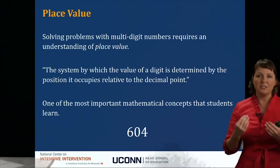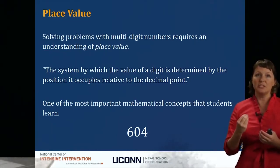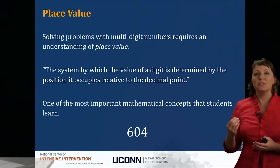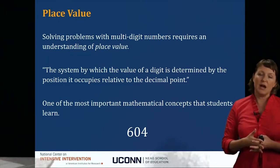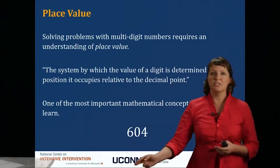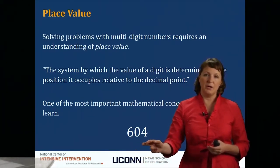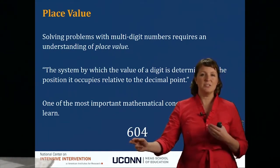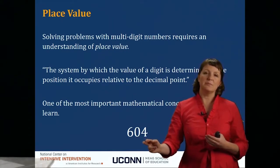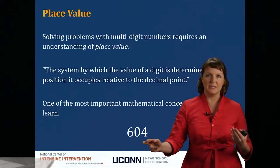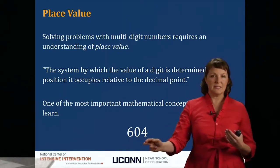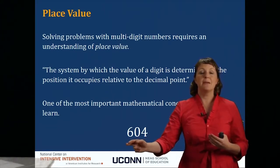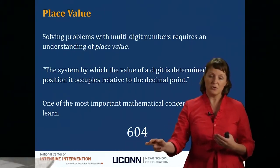Place value is a really important concept that a lot of students have difficulty with. We can define it as the system by which the value of a digit is determined by the position it occupies relative to the decimal point. So in the number 604, the 6 is in the hundreds place — it represents 600, not just 6 — and the 4 is in the ones place, meaning there are four ones.